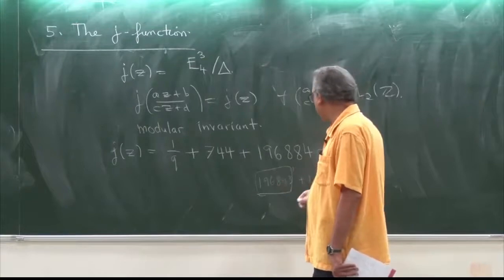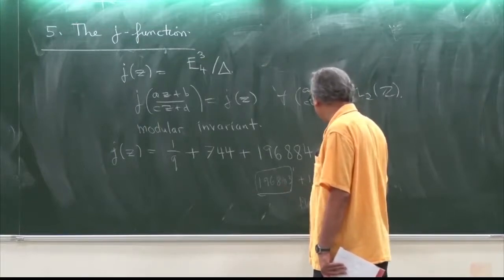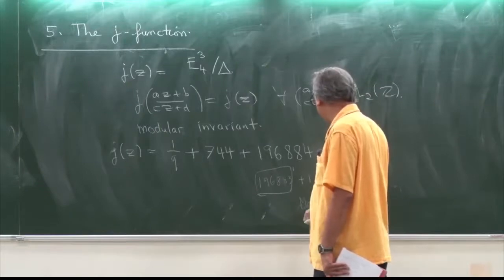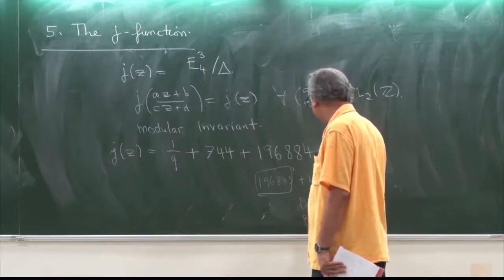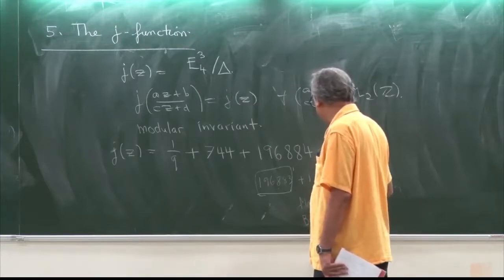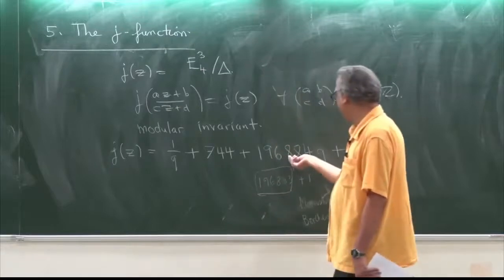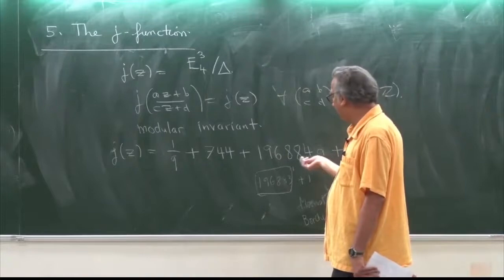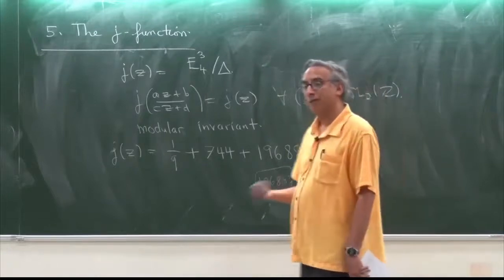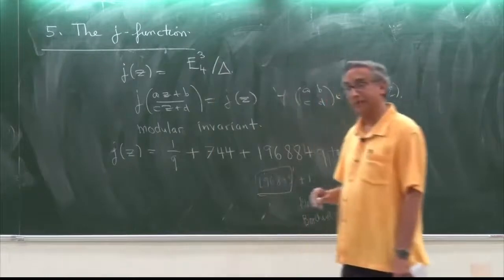This is what has led to what's called moonshine. Many people like Borcherds—he got the Fields Medal for explaining why the coefficients of the J function are intimately connected with representations of the monster group, essentially coming as degrees of representations of the monster group. This has a lot to do with the classification of finite simple groups.